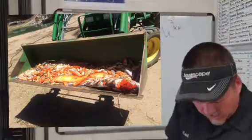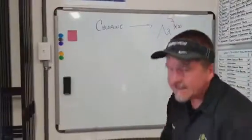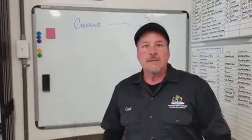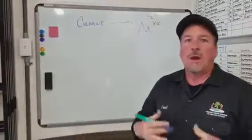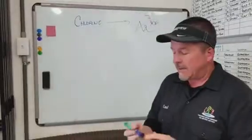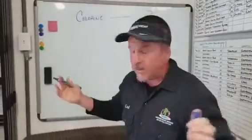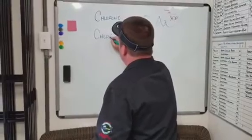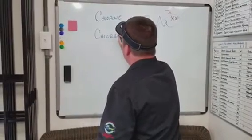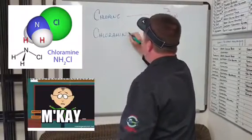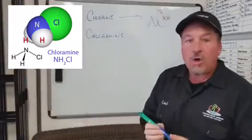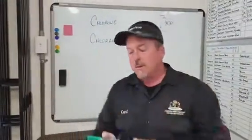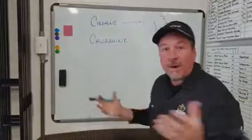The problem is, out here in California, chlorine is a gas and it dissipates really quickly out of the water. So a lot of the water companies out here in California use this fancy thing called chloramine. Now chloramine is a molecular bond between two things — anyone want to guess what it is?